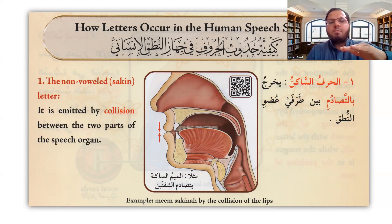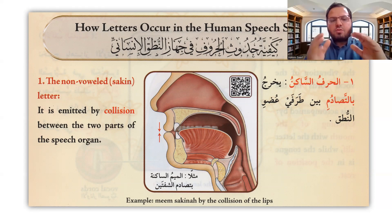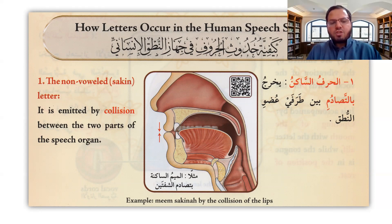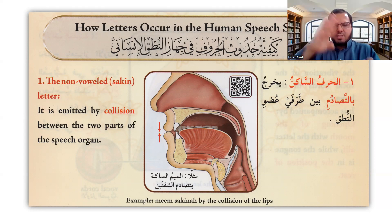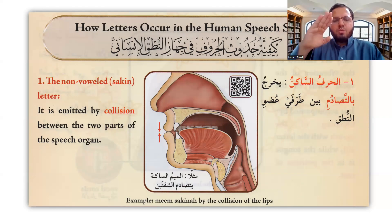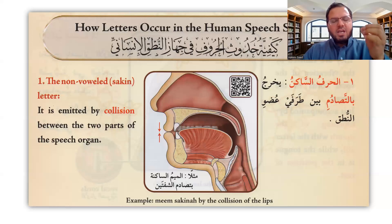For example, al-mim — we say 'mmm' — or al-ba — 'ab.' This is called a collision. It is emitted by collision between the two parts of the speech organs. We can explain the majority of the letters this way when we are making collision. These letters are emitted by collision.